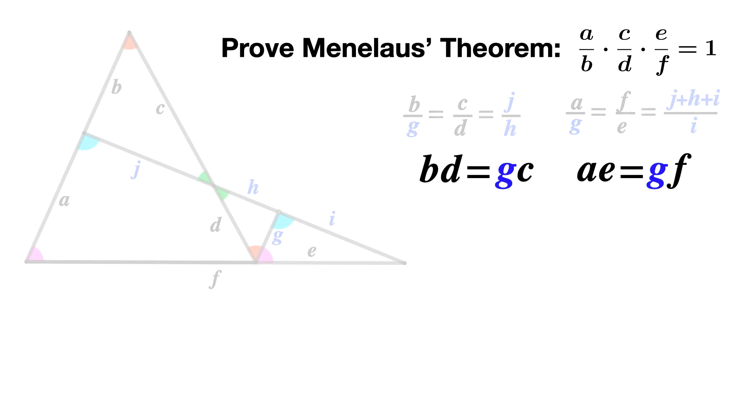If we cross multiply, we see that B times D equals G times C, and that A times E equals G times F.